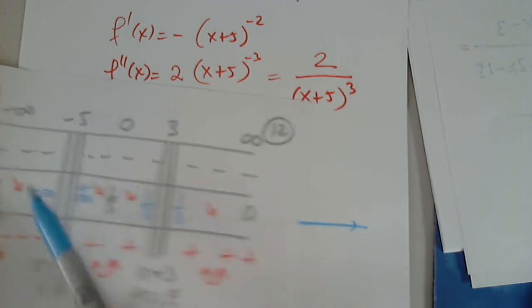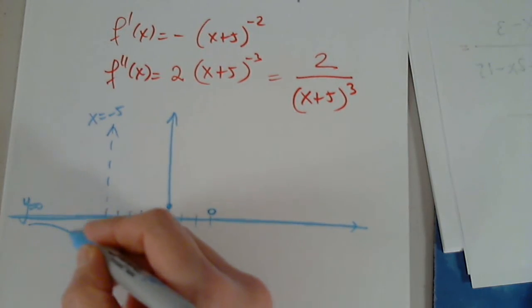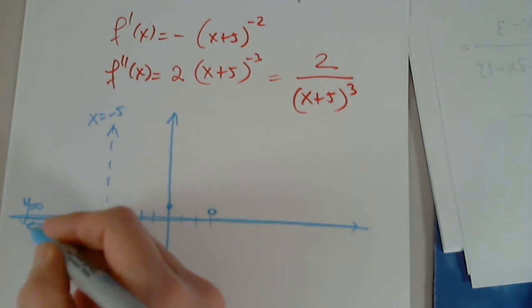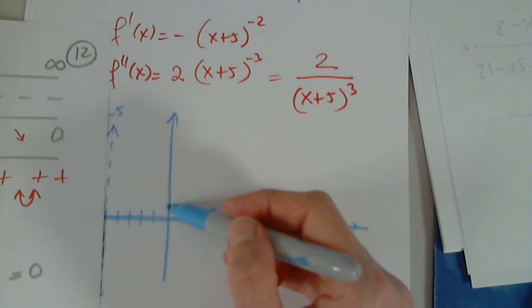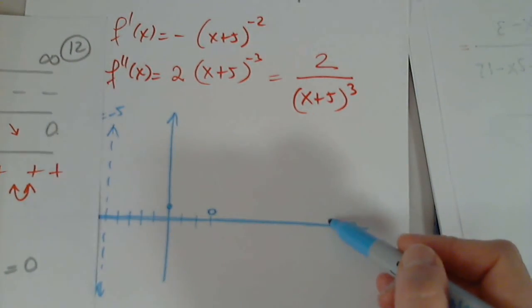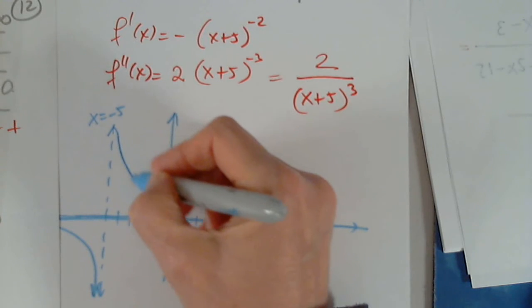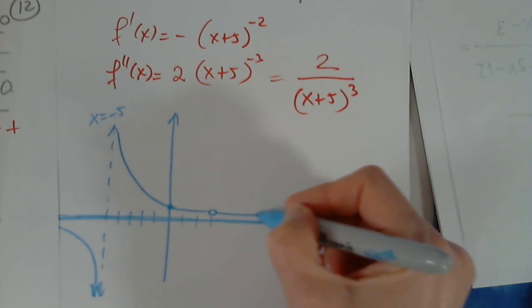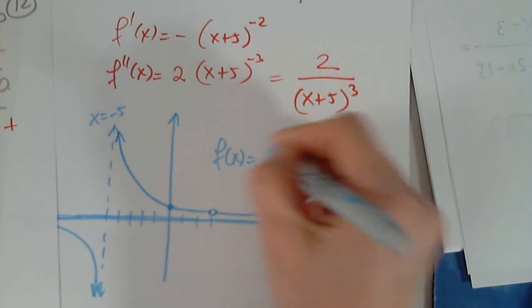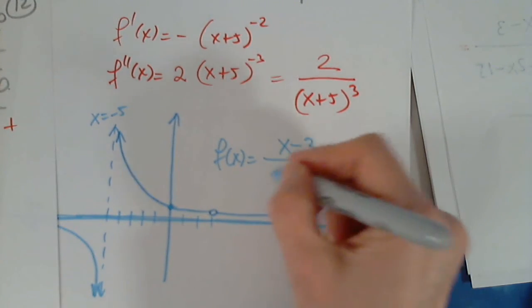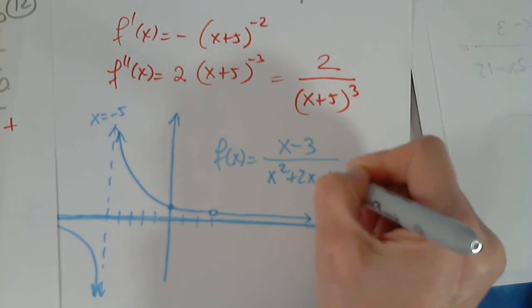Okay, opening down, decreasing from 0 to negative infinity. Okay, no problem. Coming from positive infinity, going through this point, going through the hole, approaching 0. No problem. So this is f of x, x minus 3 over x squared plus 2x minus 15.